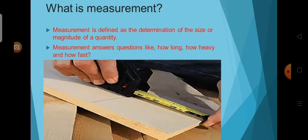What is measurement? Measurement is defined as the determination of the size or the magnitude of a quantity. It is the basis of all important scientific study. It plays an important role in our daily life. It answers the questions like how long, how heavy and how fast.